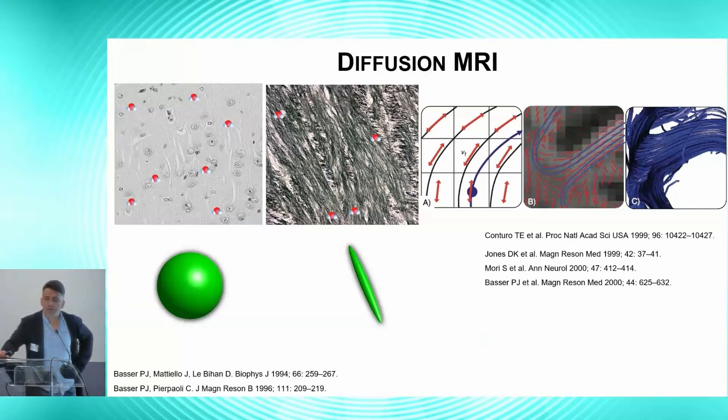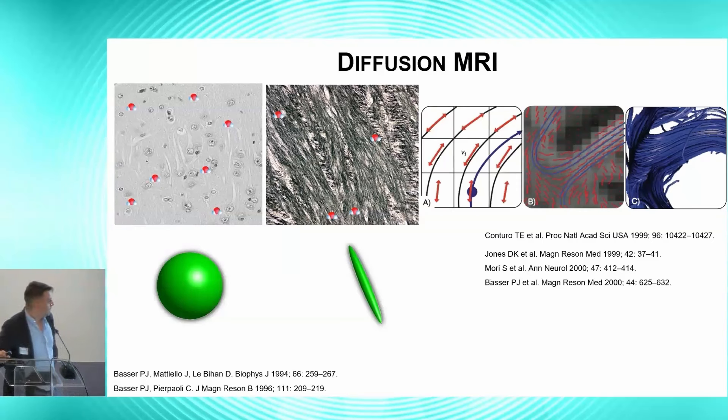Today we can measure those connections in the living human brain. And although there are a lot of deniers and people bringing down diffusion-weighted imaging, it is a fantastic method to study the connection of the living human brain. It is the only method to study connection in the living human brain.